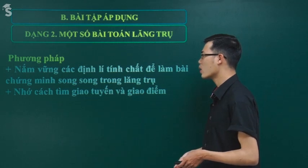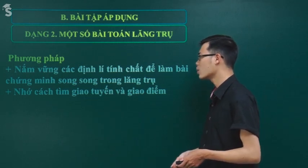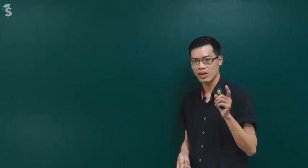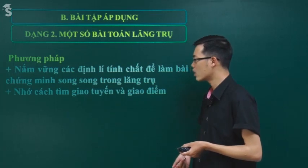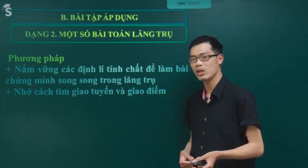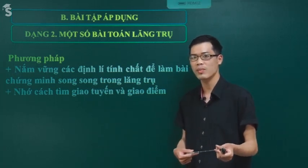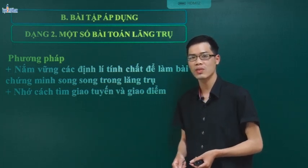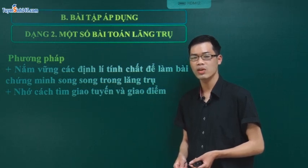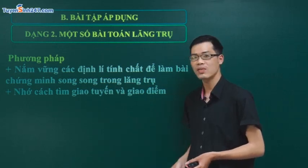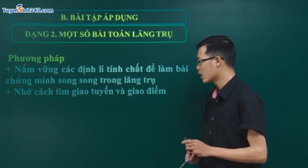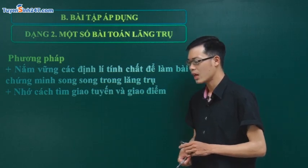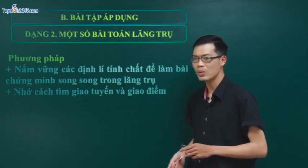Trong quá trình làm, các em cố gắng nhớ về cách tìm giao tuyến và giao điểm. Tương tự như trong hình đã học, người ta có thể hỏi tìm giao tuyến của các mặt phẳng, tìm giao điểm của đường và mặt. Ở đây cũng vậy, thầy sẽ điểm qua cho các em một số bài. Nhớ lại về hai phương pháp tìm giao tuyến: phương pháp tìm hai điểm chung, hoặc phương pháp tìm một điểm chung và kẻ song song.